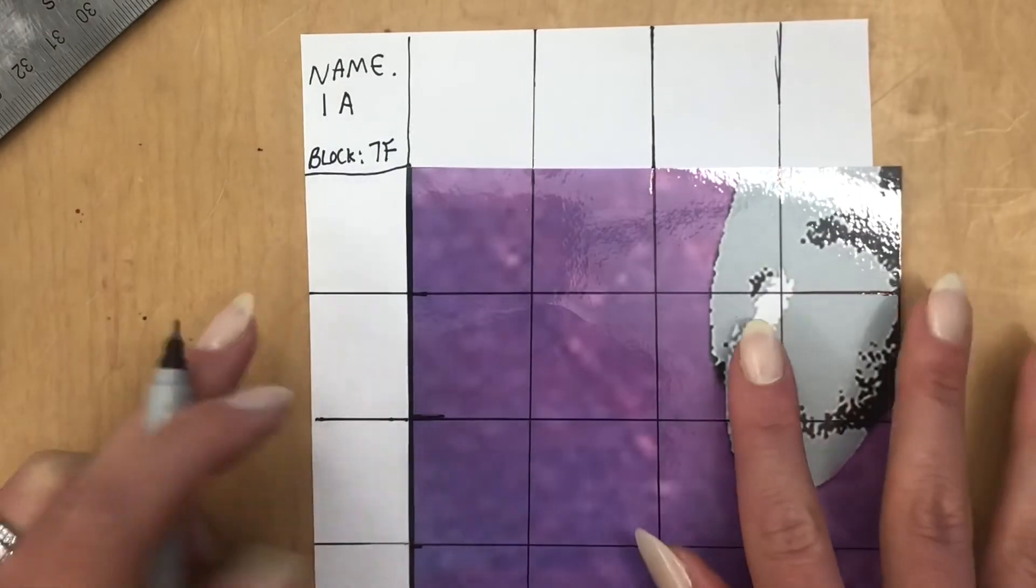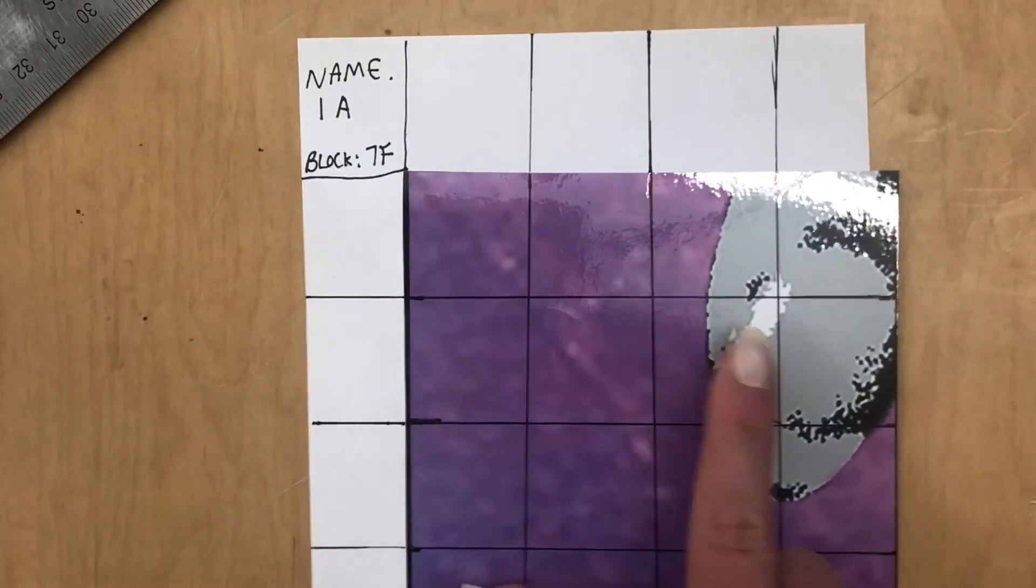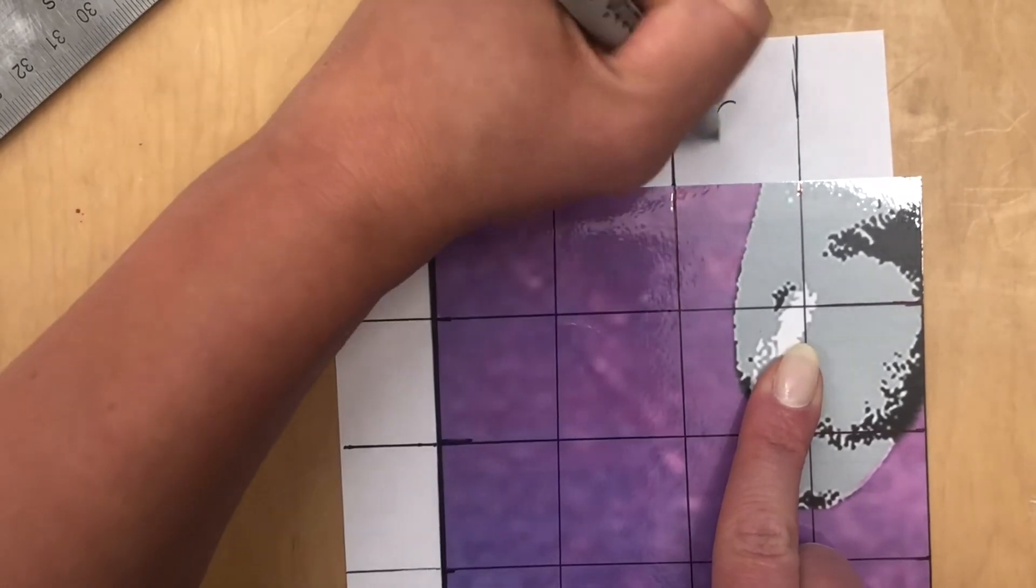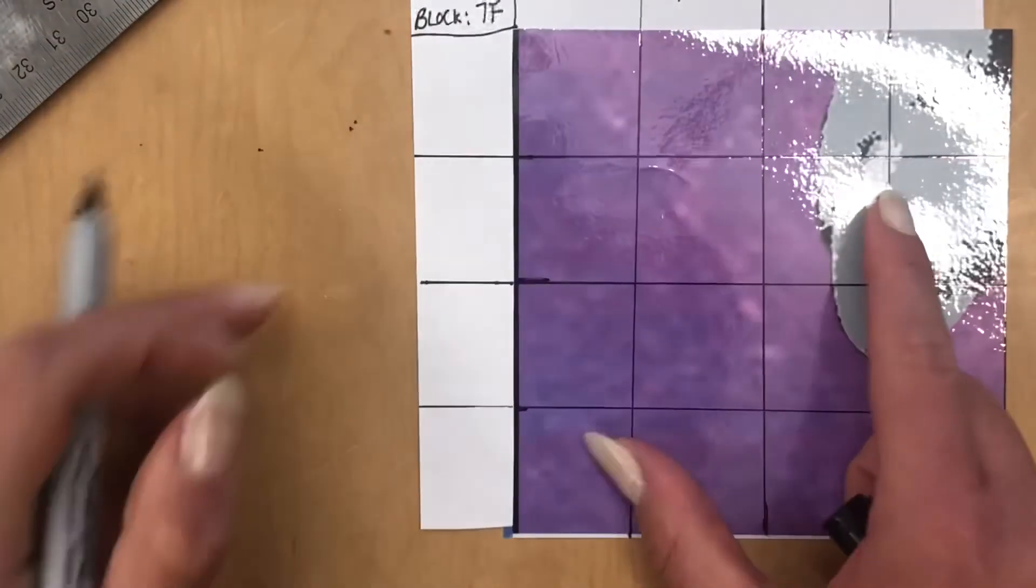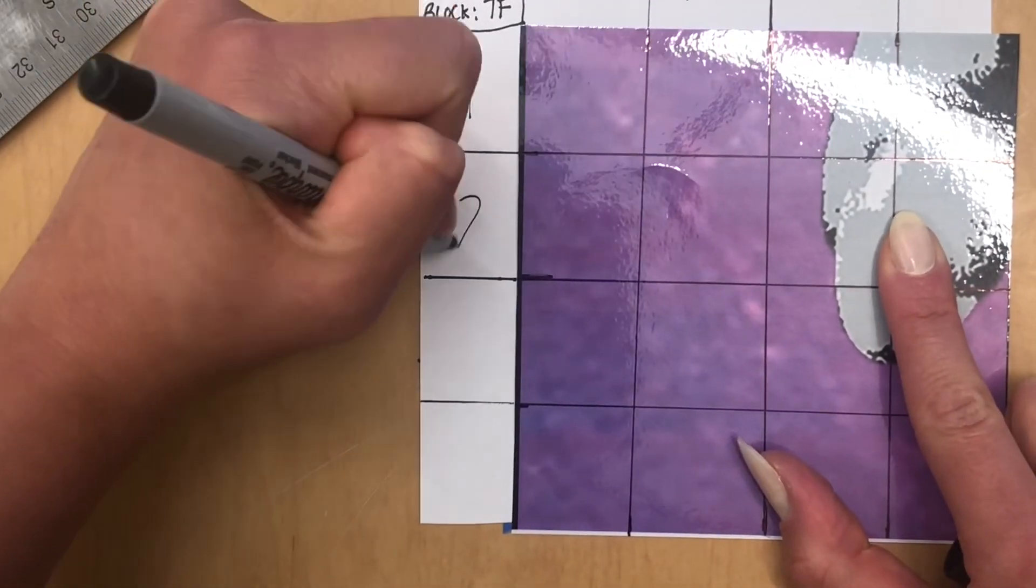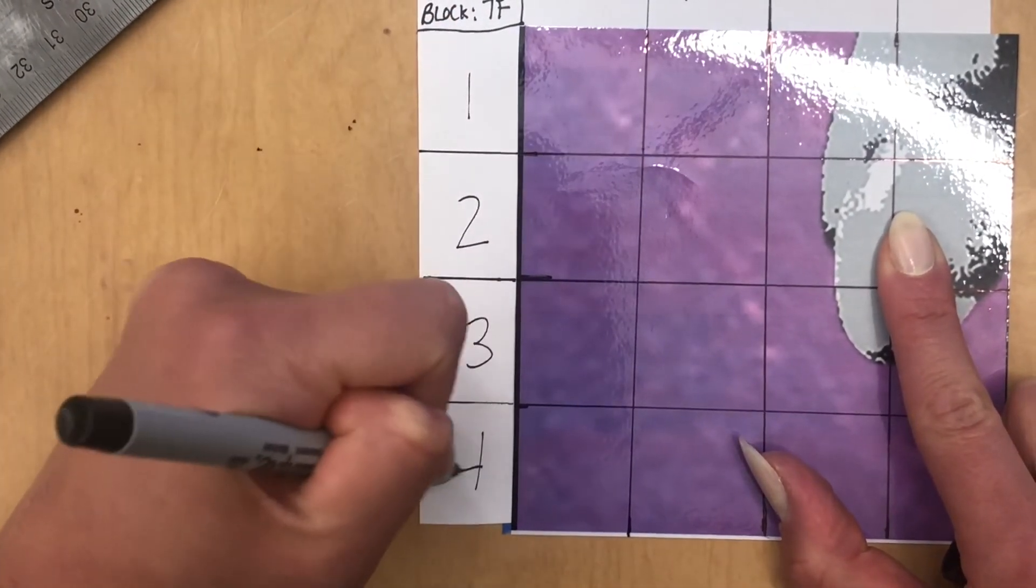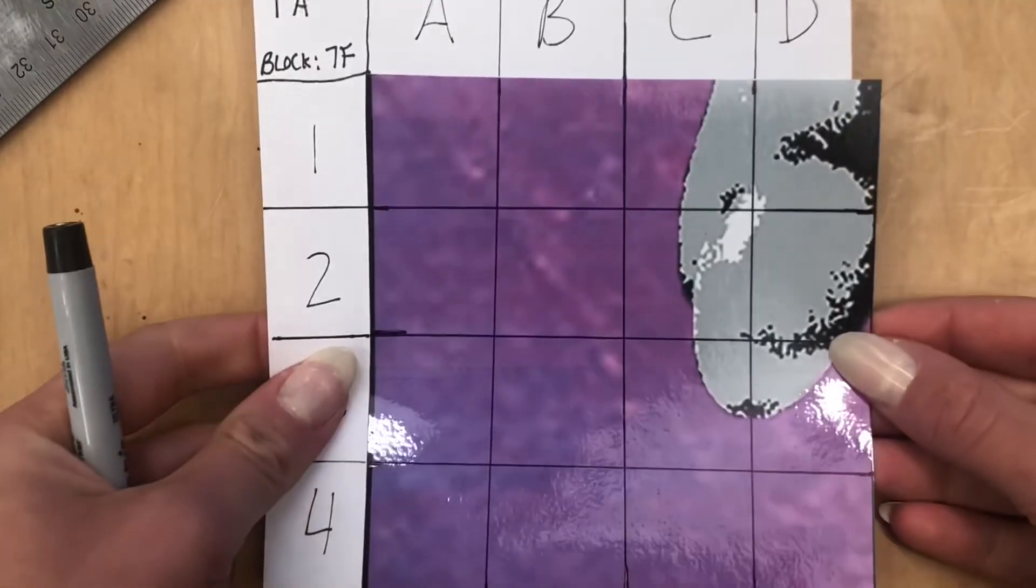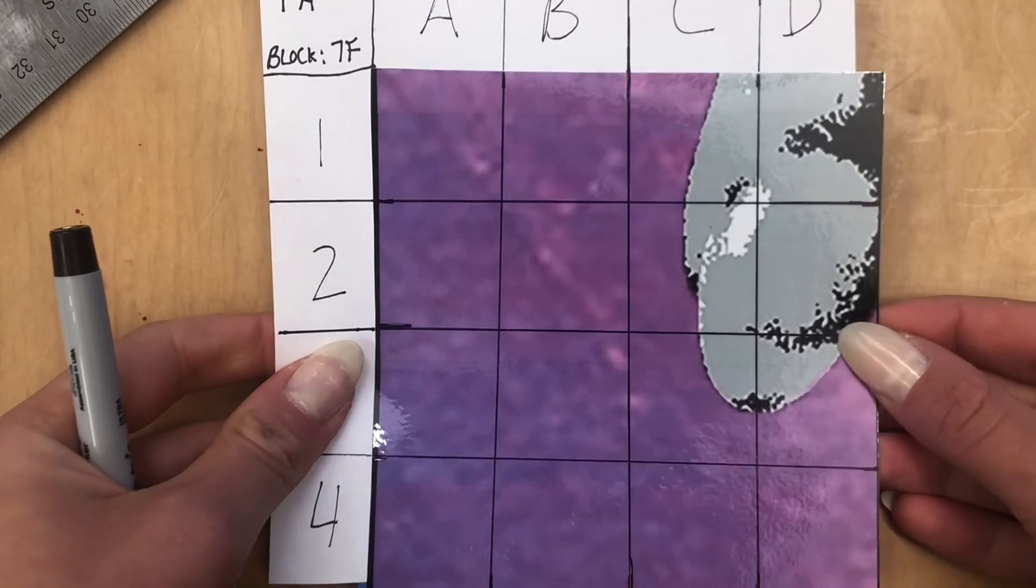And now you're going to want to add your letters at the top and numbers on the left. So the top is A, B, C, D. And the column right here on the left side is 1, 2, 3, 4. Okay. Now that you have your mural block gridded out completed, you are ready to start drawing with pencil on your watercolor paper that is gridded out as well.